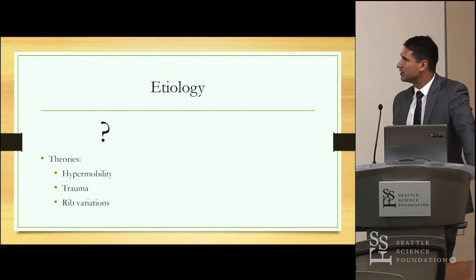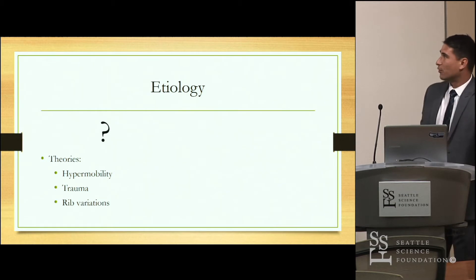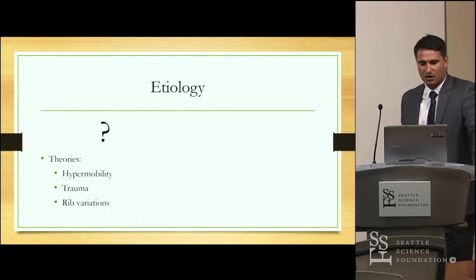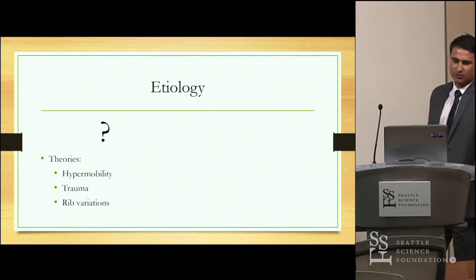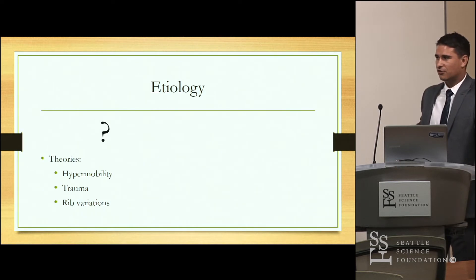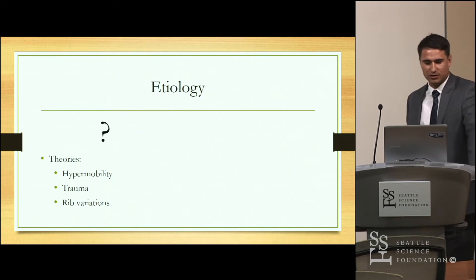The etiology is unknown — we don't actually know what exactly causes 12th rib syndrome, though there are some theories. Hypermobility is the most common theory, because the 11th and 12th ribs are floating ribs, meaning they're not attached at both ends. So they have the tendency to move more, which can irritate the 12th nerve that runs right underneath the 12th rib.